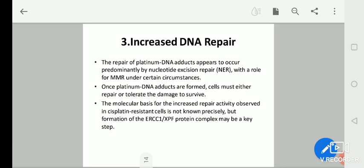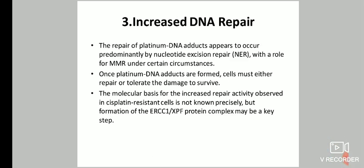Regarding increased DNA repair: the repair of platinum-DNA adducts appears to occur predominantly by nucleotide excision repair, with a role for mismatch repair under certain circumstances. Once platinum-DNA adducts are formed, cells must either repair or tolerate the damage to survive. The molecular basis for increased repair activity observed in cisplatin-resistant cells is not precisely known, but formation of the ERCC1-XPF protein complex may be a key step.